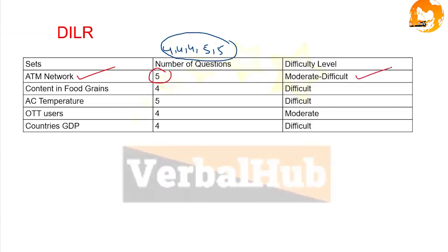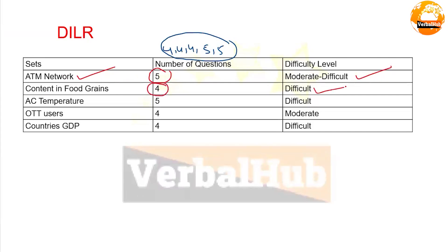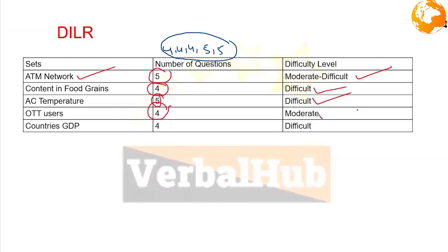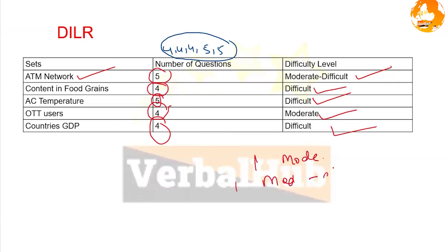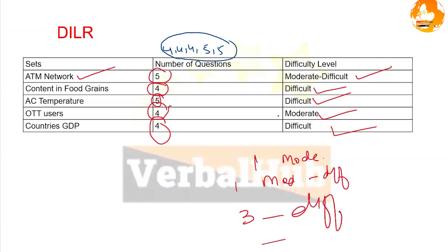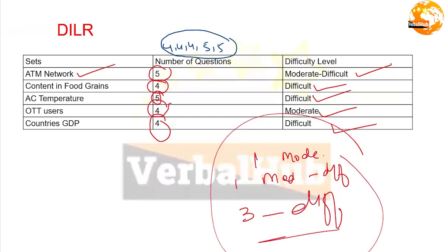The DILR sets breakdown: ATM Network had five questions at moderate to difficult level; Content of Food Grains had four questions at difficult level; AC Temperature had five questions at difficult level; OTT Users had four questions at moderate level; and Country GDP had four questions at difficult level. So there was one moderate, one moderate-to-difficult, and three difficult sets.